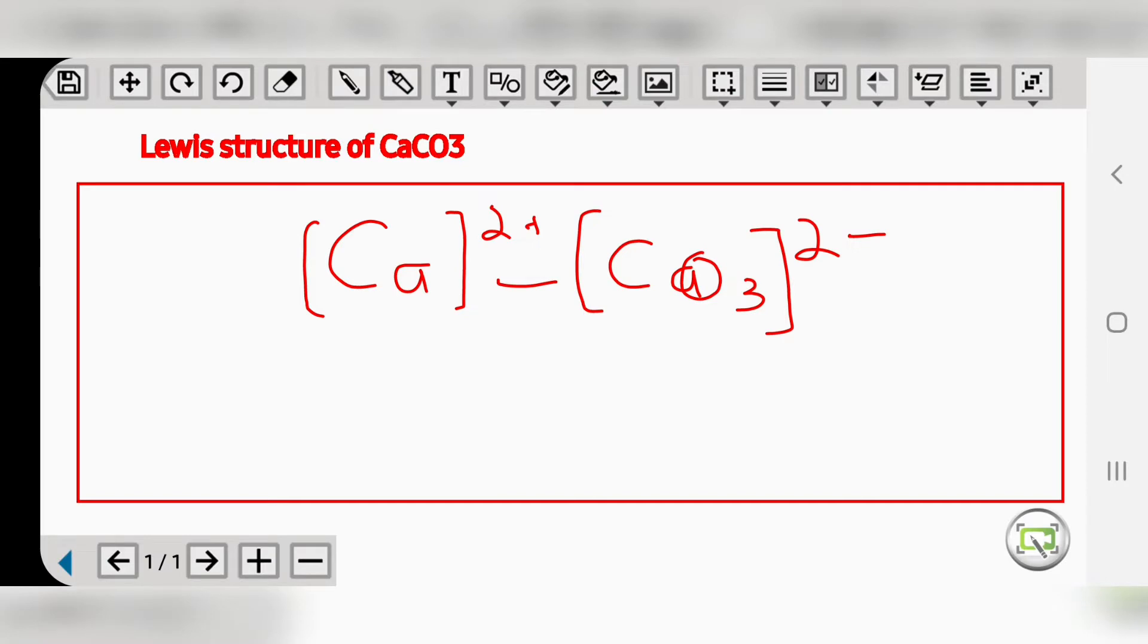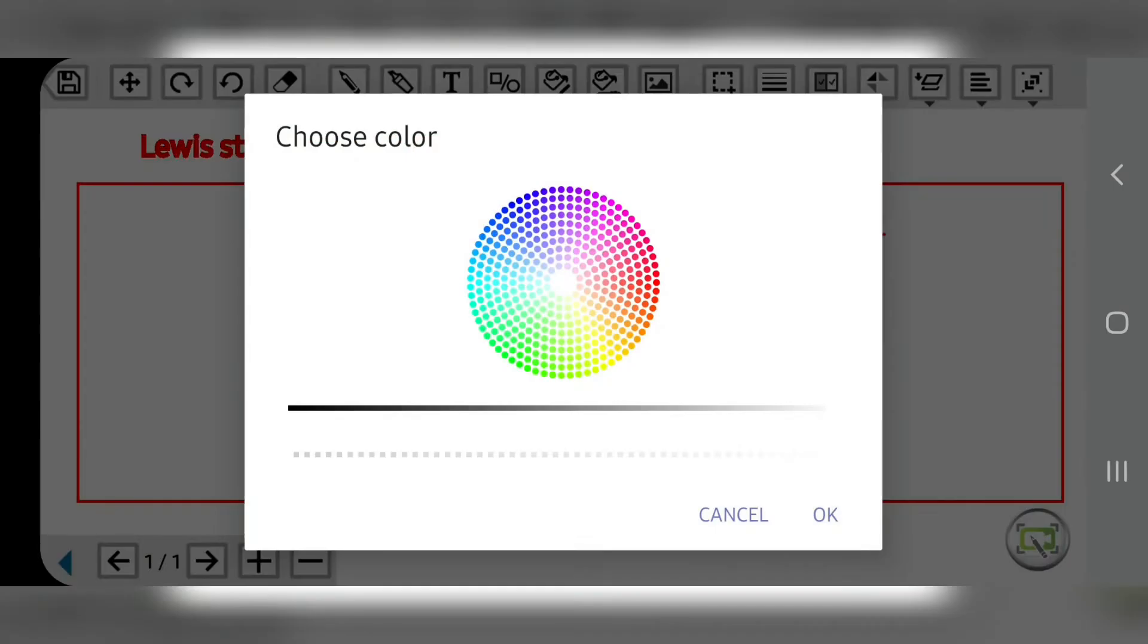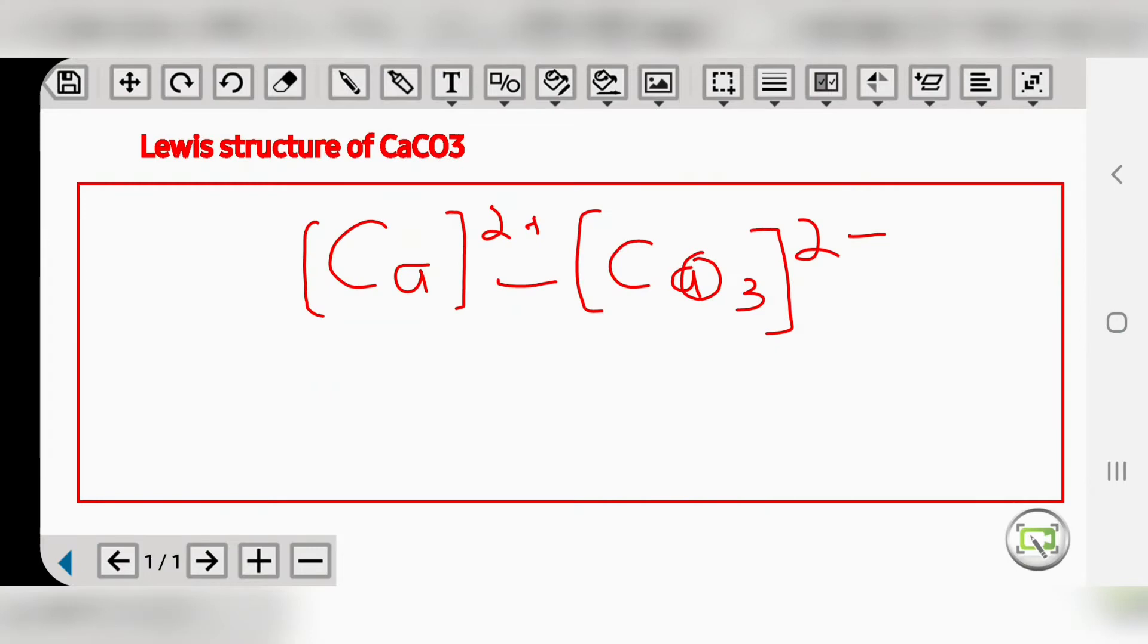You know that carbon has four electrons, plus oxygen - three oxygen atoms will have 18 electrons. This has a negative two charge, so we have to add two electrons. That comes out to be 24 total valence electrons.